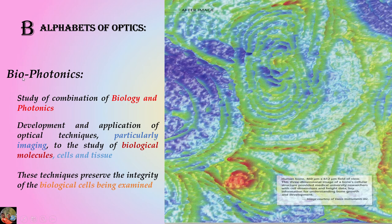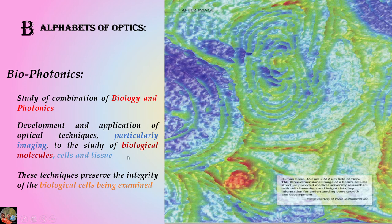Coming to letter B — B means biology and biophotonics. Biophotonics means the study of biology combined with photonics, where photonics means light. Biology plus photonics are interlinked to form biophotonics. This field is developed and applicable for optical techniques particularly in imaging of biological molecules, cells, tissues, as well as human bodies. These techniques are preservatively integrated in biological cells and examined.